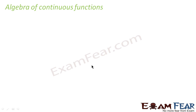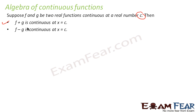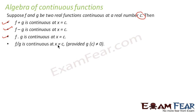Now since we know continuous functions, let's define some algebra of continuous functions. If f and g are two real continuous functions, then f plus g will also be a continuous function at x equal to c. Similarly, f minus g will also be continuous at x equal to c, f into g will also be continuous at x equal to c, and f by g will also be continuous at x equal to c — obviously, provided g is not equal to 0, because when g equals 0, this becomes infinite.